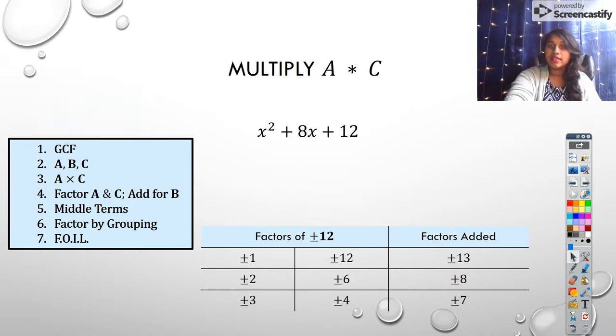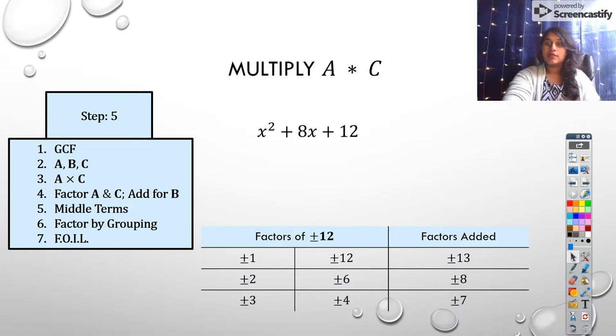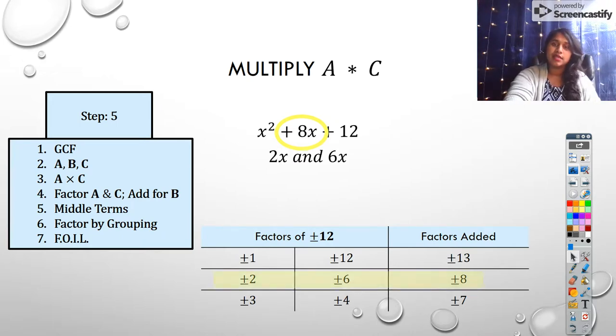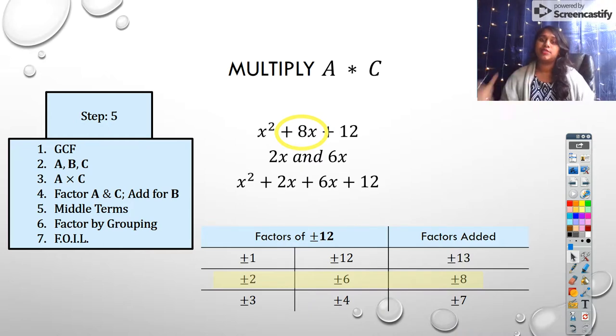So I created a table to make this easier for us. Factors of 12 are going to be 1 and 12, 2 and 6, and 3 and 4. But which of these would add up to B? So I went ahead and added them, and we got 13, 8, and 7. And the only one that looks similar, the only one that is going to add up to 8 is that middle one. So this is what we call our middle terms. That 8x is actually going to be comprised of 2x and 6x.